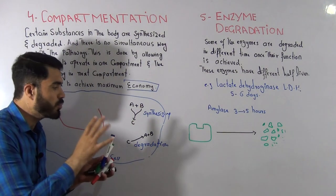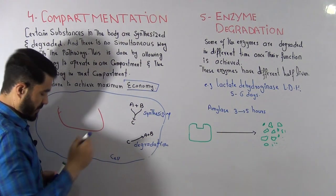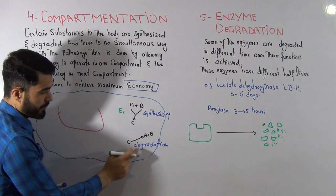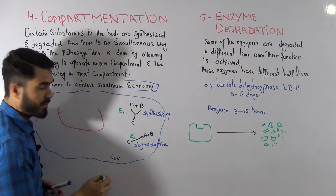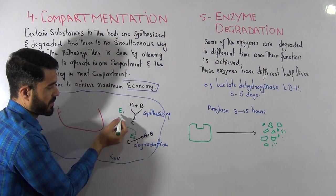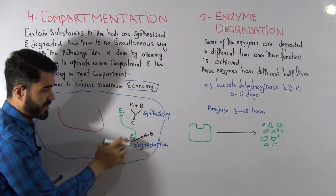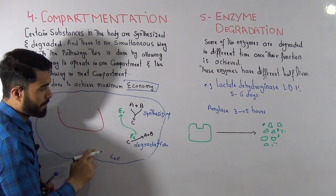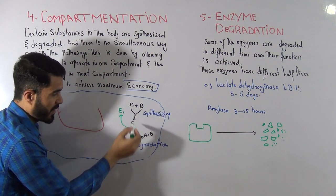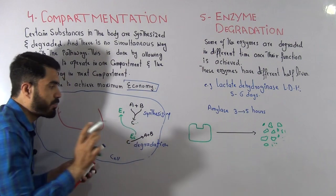However, these two processes cannot occur simultaneously inside the cell. If enzyme E1 is synthesizing C and enzyme E2 is degrading C, and both enzymes are present in the same location, then E2 will disturb E1 — it will start degrading the product C as soon as it's made. We should not allow E2 to act on C in that situation. Similarly, if A plus B is combining to get C and E2 is also present, it will degrade C, which we don't want.